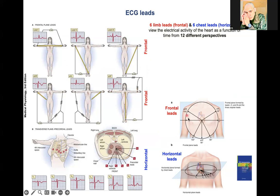Now let's put these 6 frontal leads in the circle and see how they look at the electrical activity of the heart. Lead 1 is at 0 degrees, Lead 2 at 60 degrees, Lead 3 at 120 degrees, AVF at 90 degrees, AVR at minus 150 degrees, and AVL at minus 30 degrees. So we have 6 different perspectives for the frontal leads.